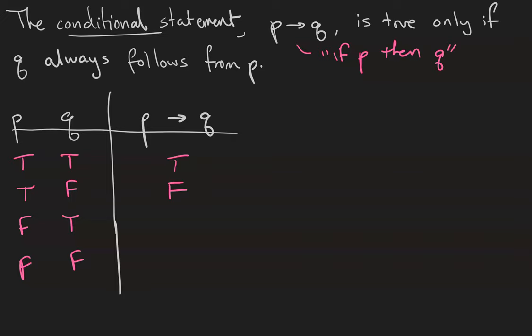Now what do we do when P is false? The conditional statement just says that if P is true Q has to be. If P is not true then Q can be whatever it wants, so it's true in both of these second cases.